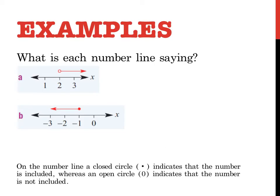What is each of these number lines saying? Well, I put this note down here, down the bottom, and it's really important that you write this down. On a number line, a closed circle indicates that number is included, whereas an open circle indicates that the number is not included. So this one here for A, this number line is saying that X is greater than 2. 2 is not included because the circle is open.